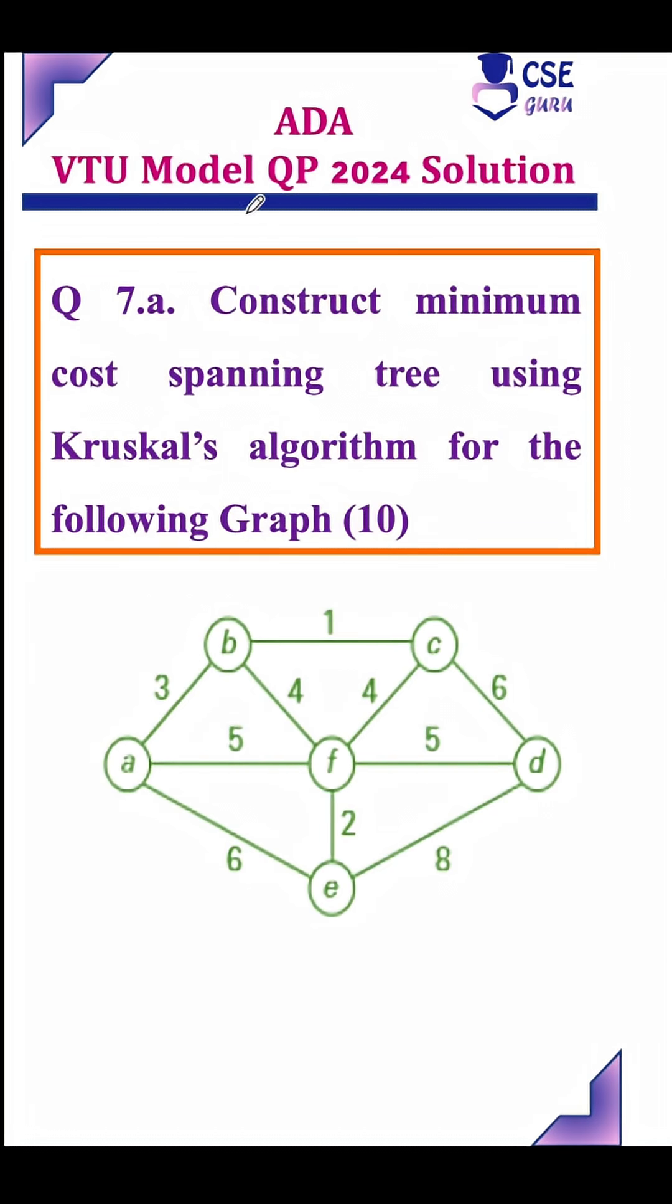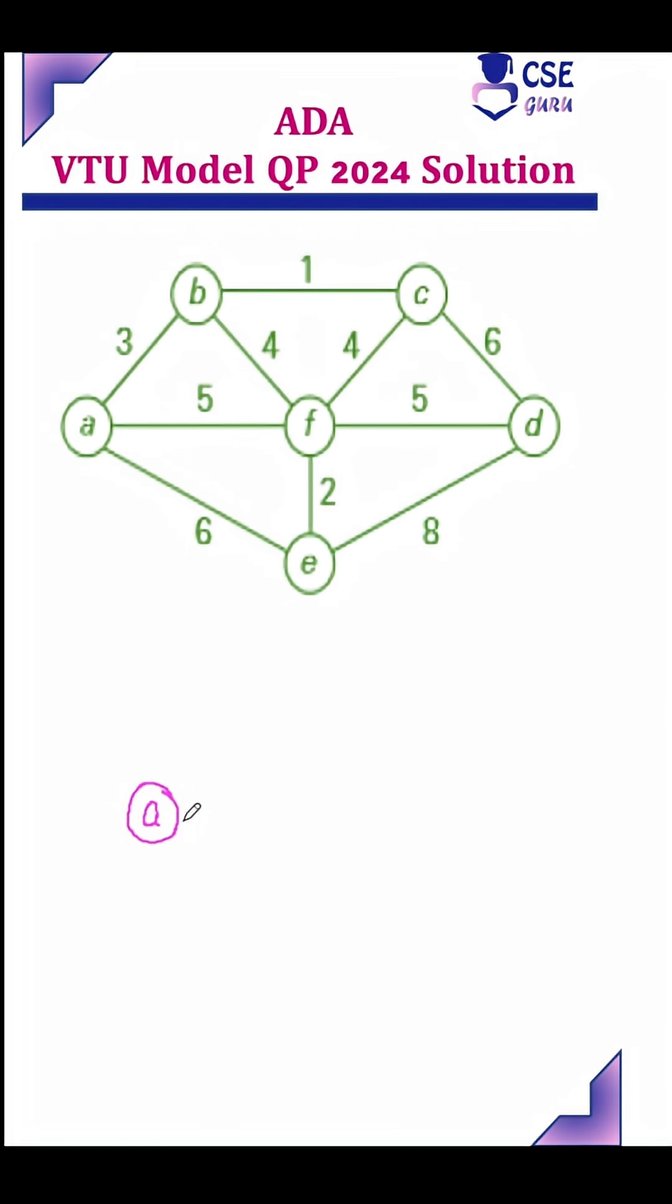Analysis and Design of Algorithm, VTU model question paper 2024 solution. Question number 7a: construct minimum cost spanning tree using Kruskal's algorithm.